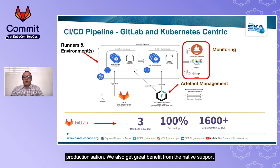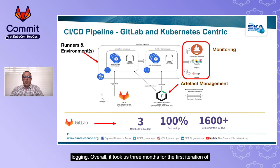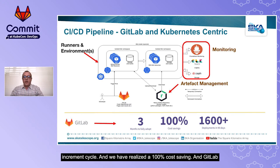We also get great benefit from the native support provided by Elastic Stack and Prometheus integration for monitoring and logging. Overall, it took us three months for the first iteration of adoption for GitLab. We do 1,600-odd deployments in a 90-day program increment cycle and we have realized 100% cost saving.